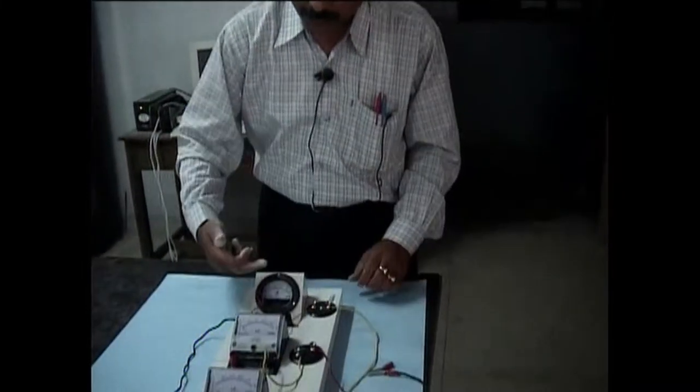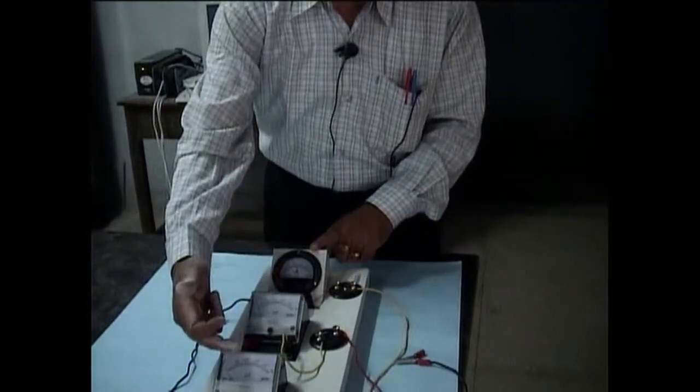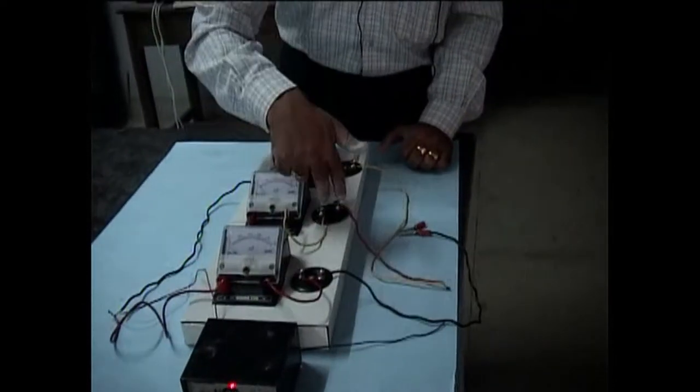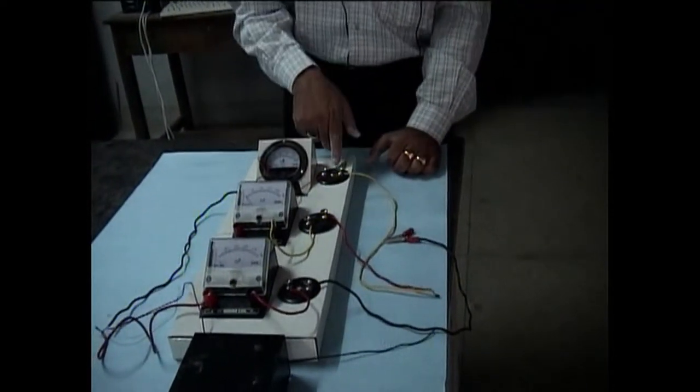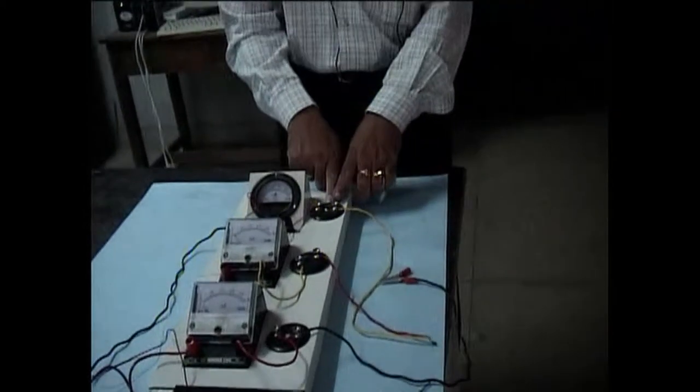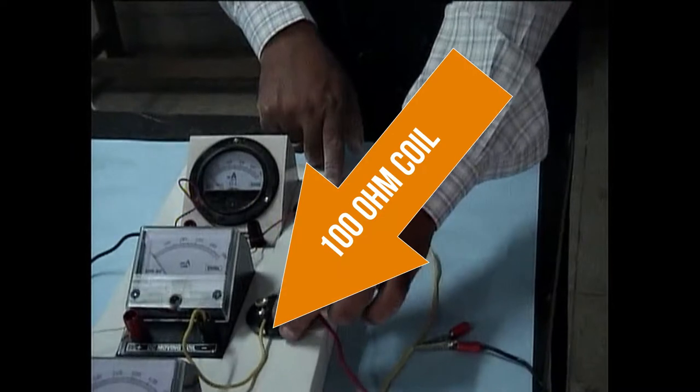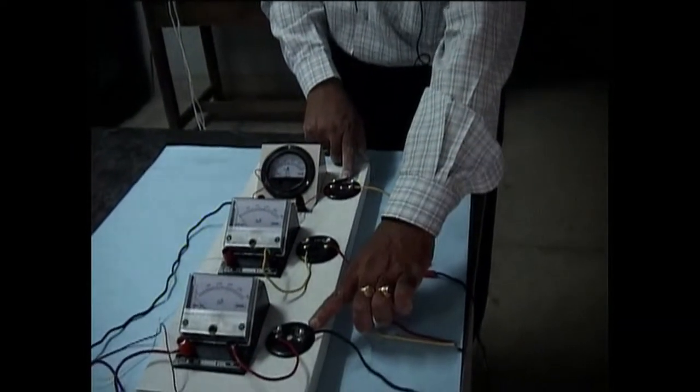Now let us see practically how the resistors can be connected in parallel. Here I have taken three ammeters or milliammeters, this is a battery eliminator, and these are the three resistors. In this it is 100 ohm resistor, this is again 100 ohm resistor, and this is 10 ohm resistor.